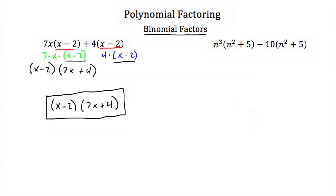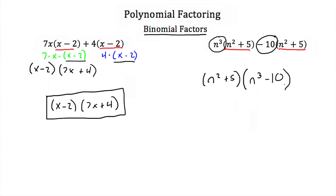Here we have n cubed times n squared plus 5, minus 10 times n squared plus 5. We have a common binomial n squared plus 5. If we factor that out, we put it on the outside, then look at what's left in each term. In the first term all that's left is n cubed, and in the second term all that's left is negative 10. So the factored form is n squared plus 5 times n cubed minus 10.